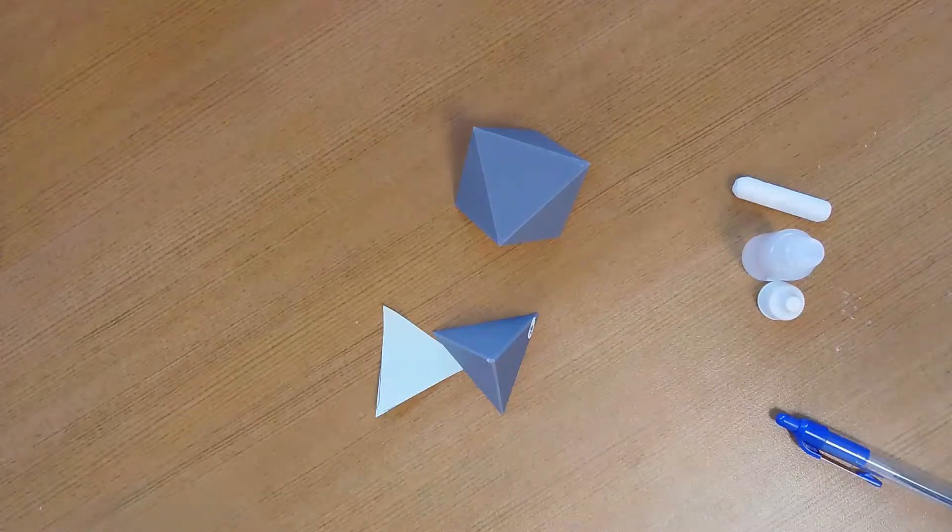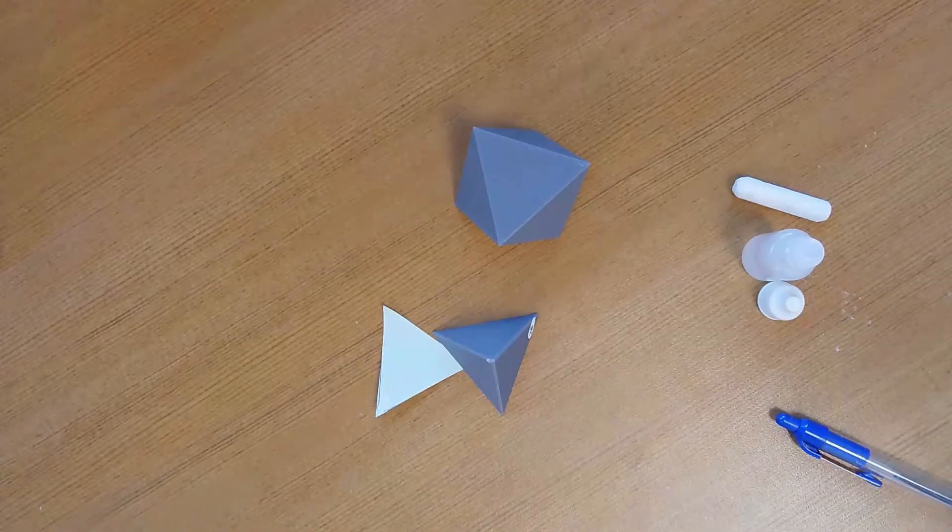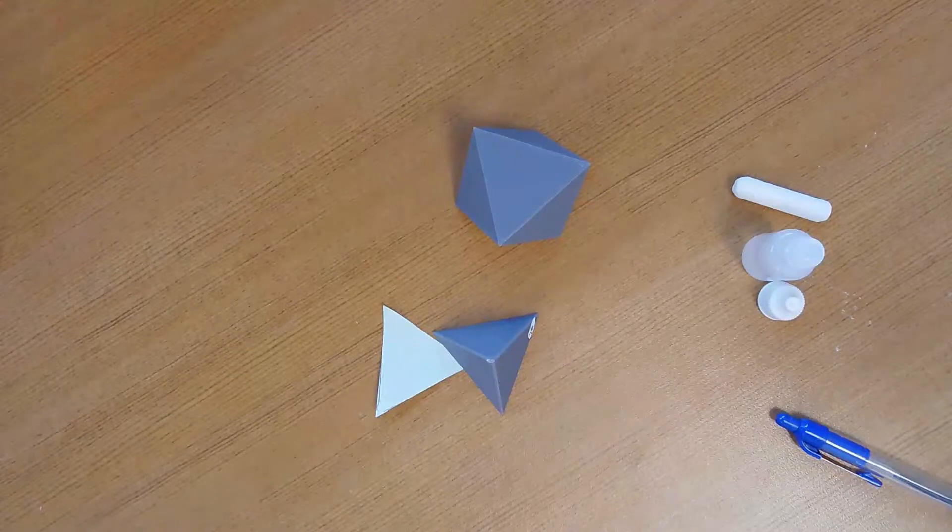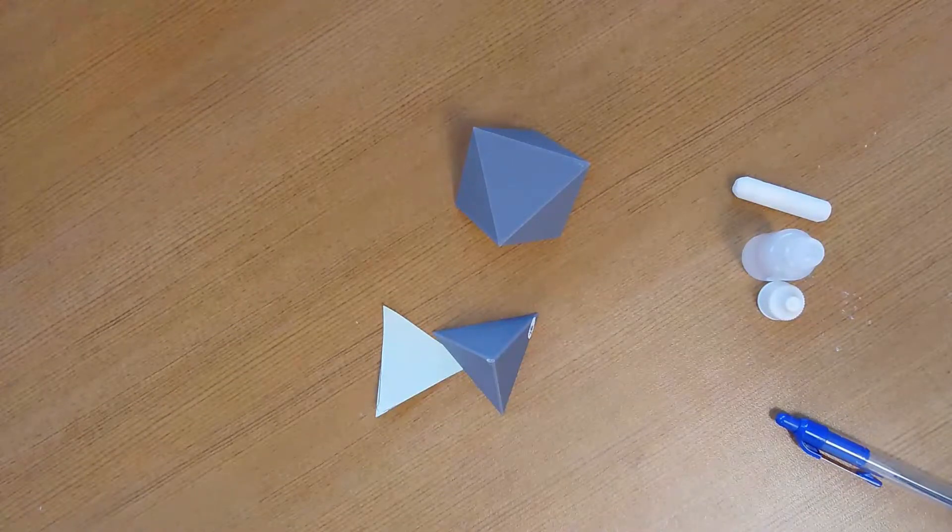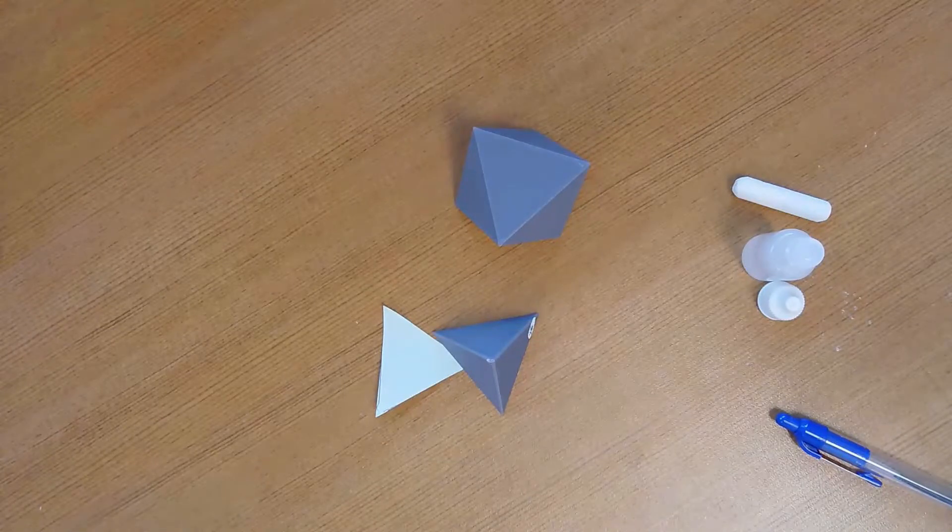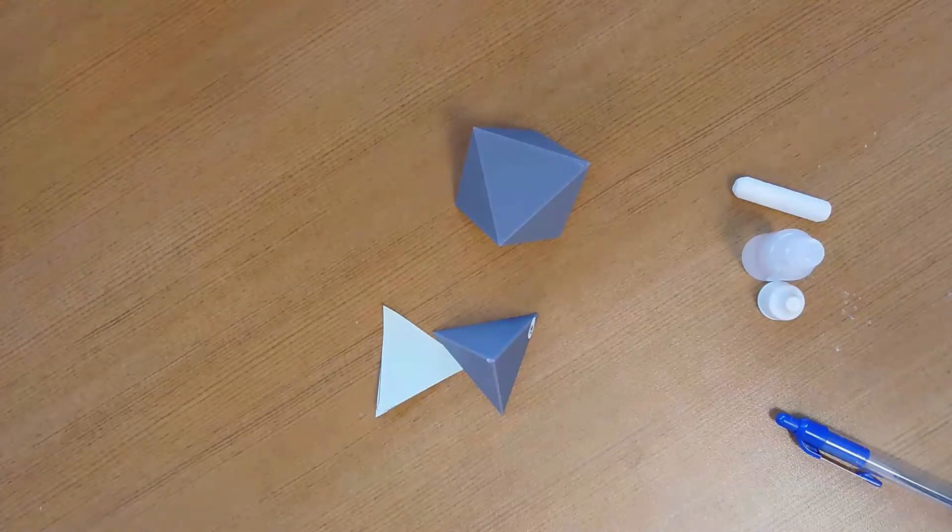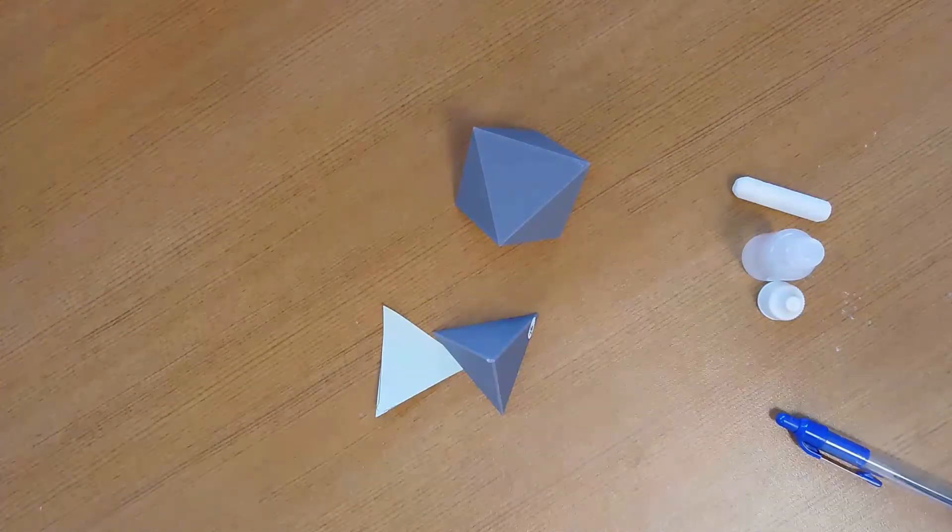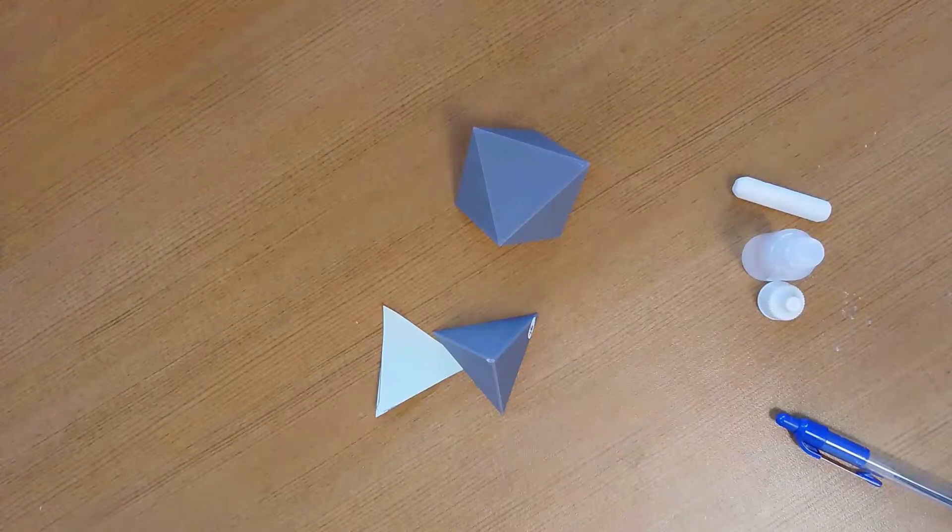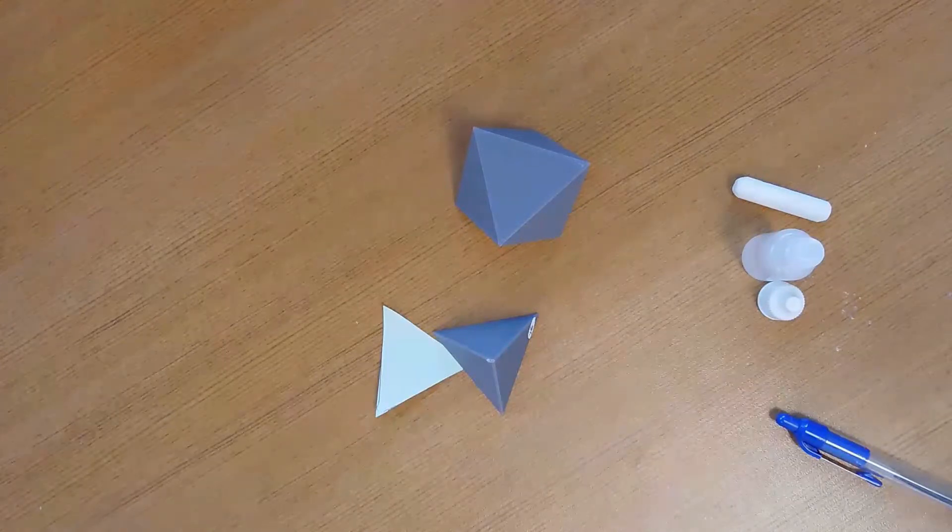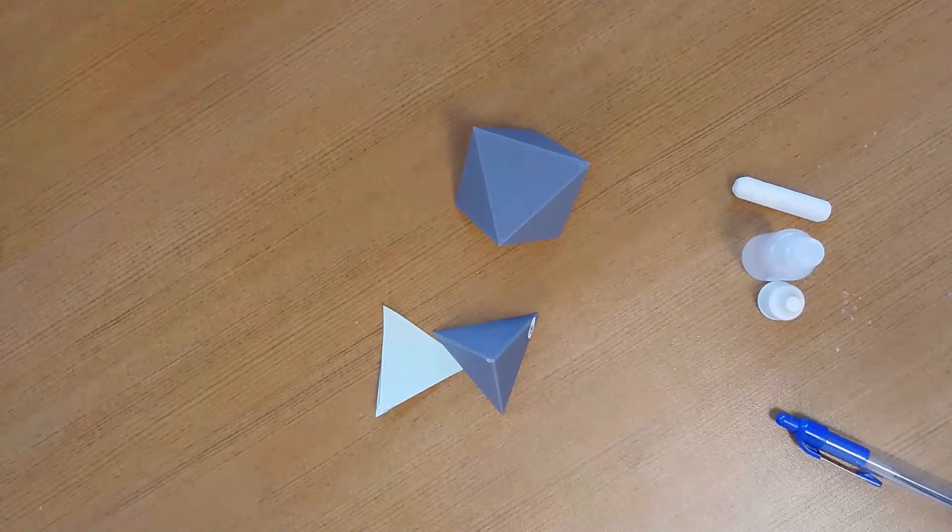There are twofold, threefold, and sixfold rotoinversions, also onefold rotoinversions, but they can be explained by a combination of other symmetry elements. For example, a onefold rotoinversion is the same thing as a crystal having center. So if you have a onefold rotoinversion, that crystal must also have center.